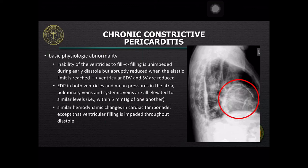The basic physiologic abnormality is the inability of the ventricles to fill. Filling is unimpeded during early diastole but abruptly reduced when the elastic limit is reached. The ventricular end-diastolic volume and stroke volume are subsequently reduced. Diastolic pressure in both ventricles and mean pressures in the atria, pulmonary veins, and systemic veins are all elevated to similar levels, within 5 mmHg of one another.